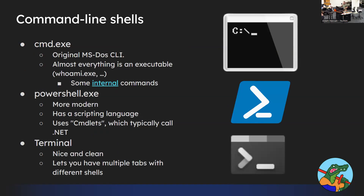For command line shells, the original one is called cmd.exe. It uses executables — cmd.exe is an executable, and so is whoami.exe. It's really old and has a lot of internal built-in commands. Now it's not used so often because of powershell.exe, which is more modern. PowerShell has an object-based notation where every single output of a command is an object you can extract fields from, which is nice compared to Linux Bash. It uses commandlets that call .NET — an API in Windows that lets you control anything Windows does. The Windows Terminal is a newer product that allows you to have multiple tabs and multiple shells like cmd.exe and powershell.exe.